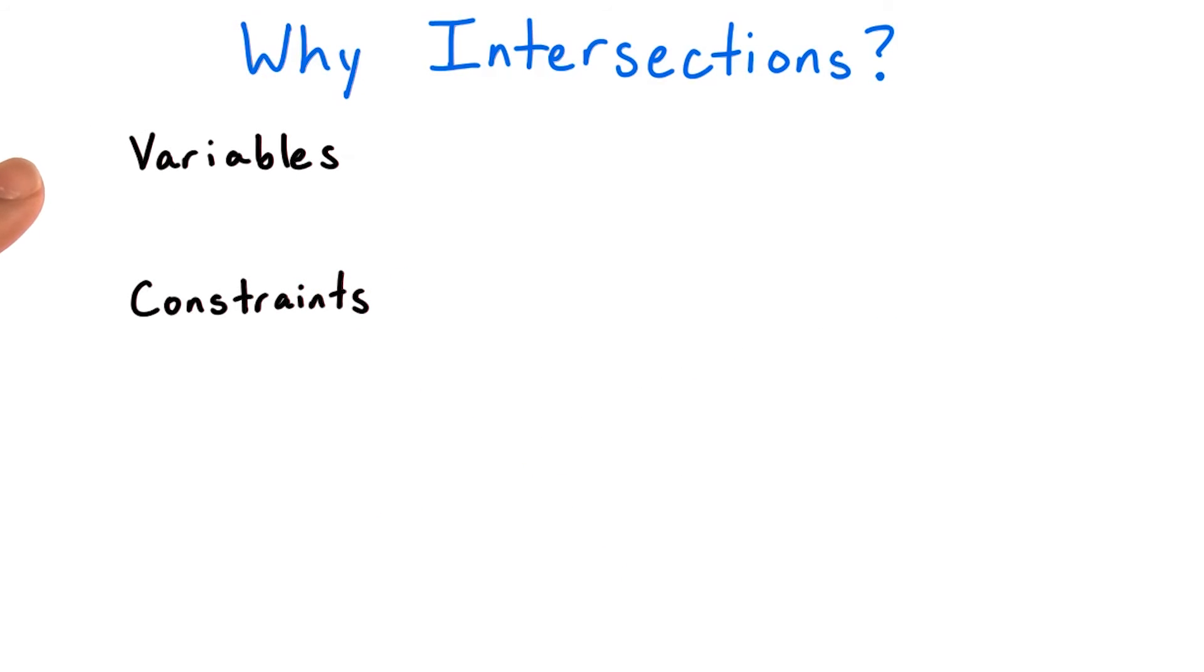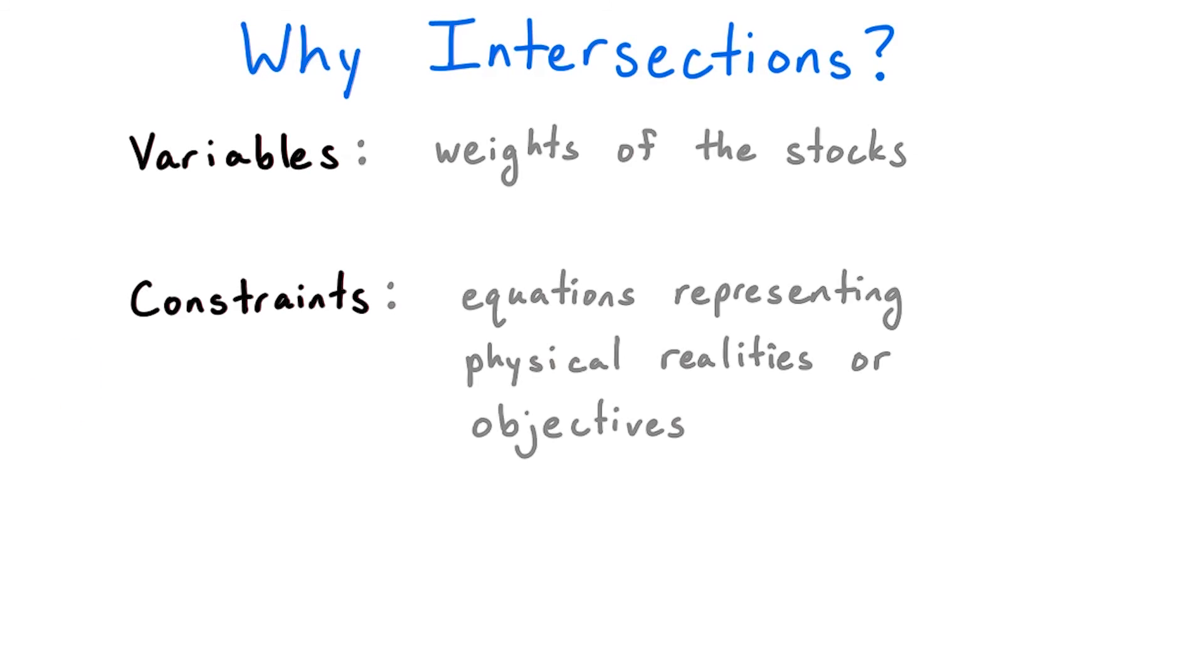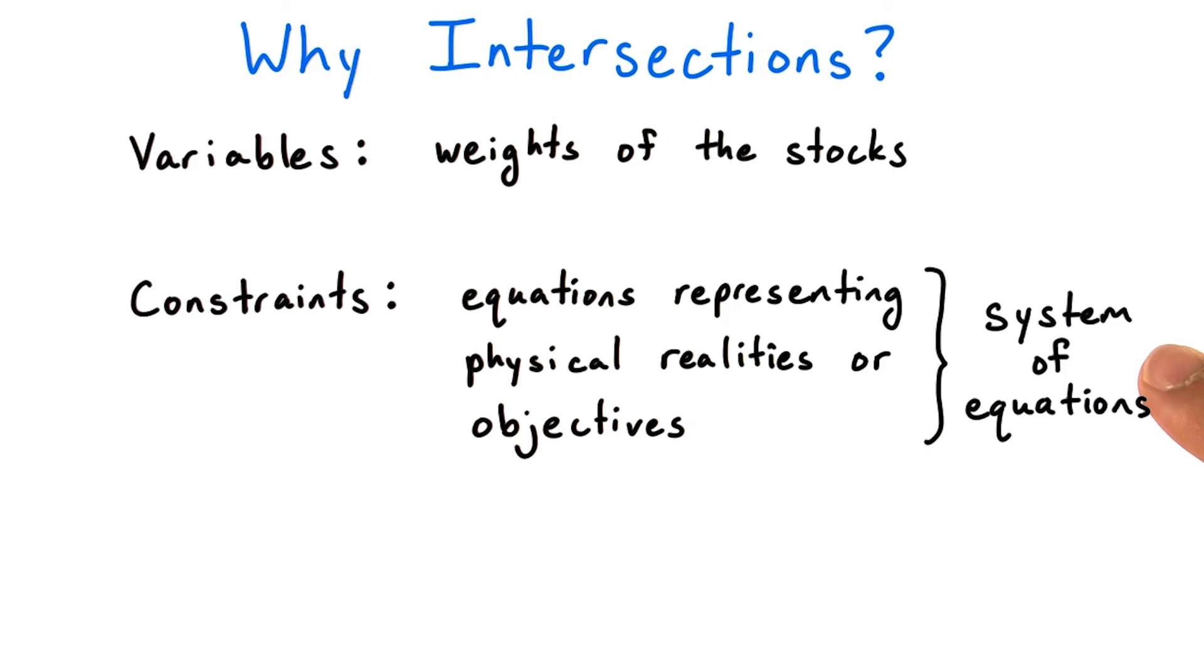Often, variables are factors that are within our control, but which we want to set to correct values in order to satisfy some constraints. In the previous example, our variables were the weights of the stocks in the portfolio, and we had two constraints that we wanted the weights to satisfy in order to achieve some goal. Interpreting this problem in geometric language, we created two lines and we wanted to find the point where they intersected. What we created is called a system of linear equations.